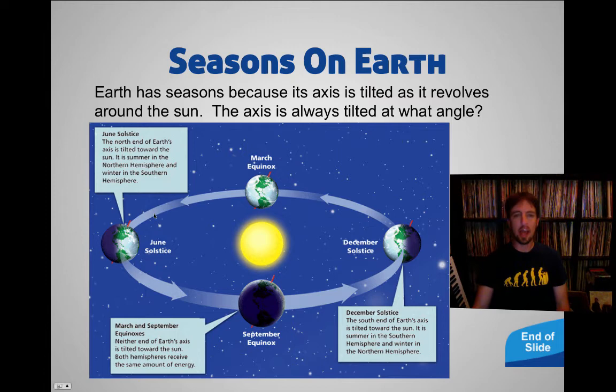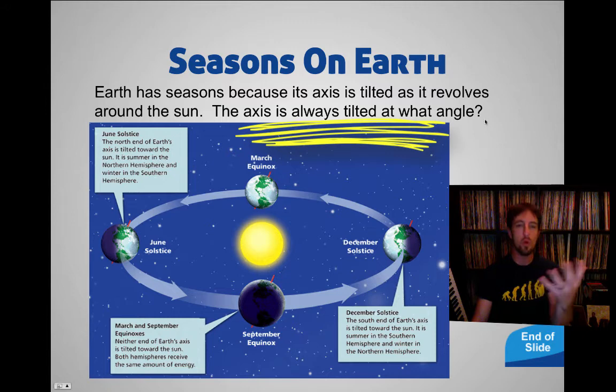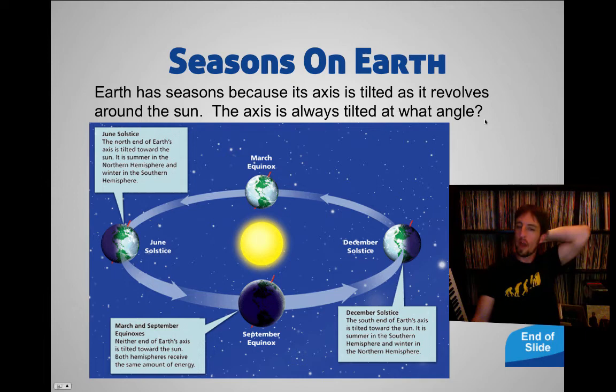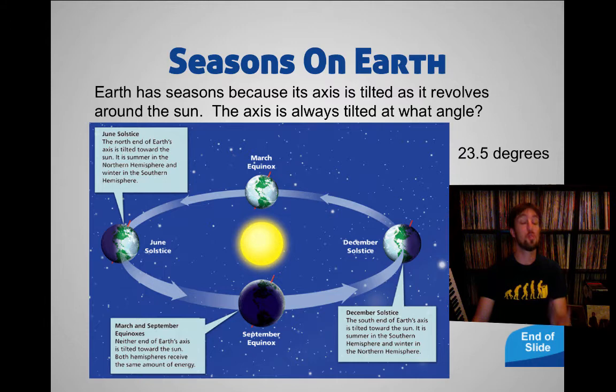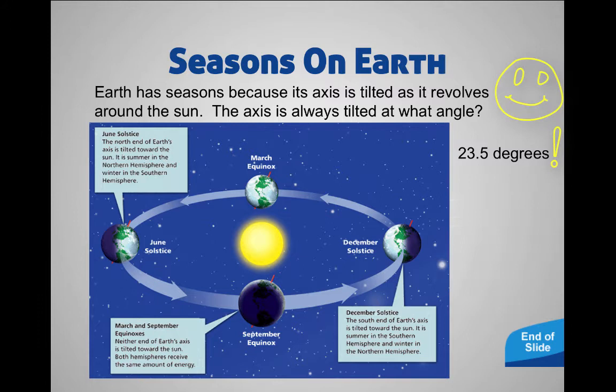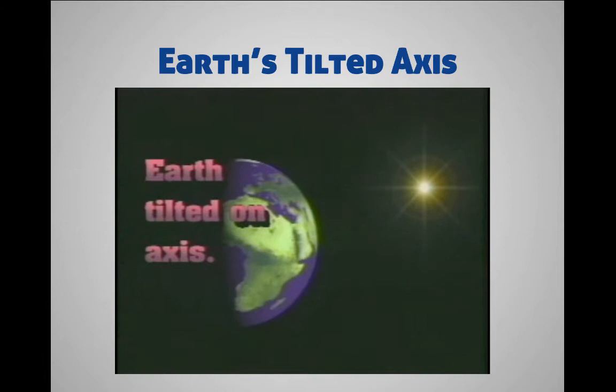Notice that our axis is always tilted at an angle. The axis is always tilted at the same angle — this is the reason why we have seasons. It's because of this tilt that never changes. What angle is it tilted at? Did you guess 23.5 degrees? If you did, well done. The major reason our planet experiences seasons has to do with the fact that the Earth is tilted on its axis.